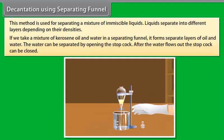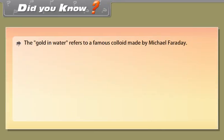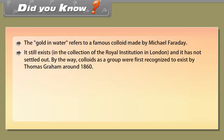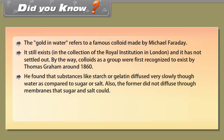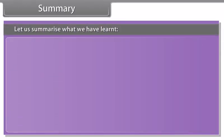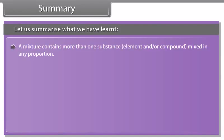Did you know? 'Golden water' refers to a famous colloid made by Michael Faraday. It still exists in the collection of the Royal Institution in London and has not settled out. Colloids as a group were first recognized by Thomas Graham around 1860. He found that substances like starch or gelatin diffused very slowly in water compared to sugar or salt, and did not diffuse through membranes that sugar and salt could pass through. He also found he could make crystals of salt or sugar but not of starch or gelatin. He coined the word 'colloid' from the Greek for glue to describe this new category of mixtures.